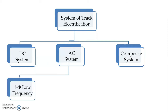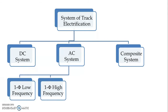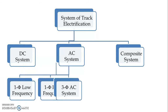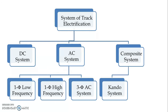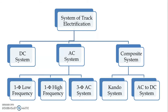In the case of the AC system, we have three different categories: single phase low frequency AC system, single phase high frequency AC system, and three phase AC system. In the composite system, we have two categories: one is the Cando system and the other is the AC to DC system.